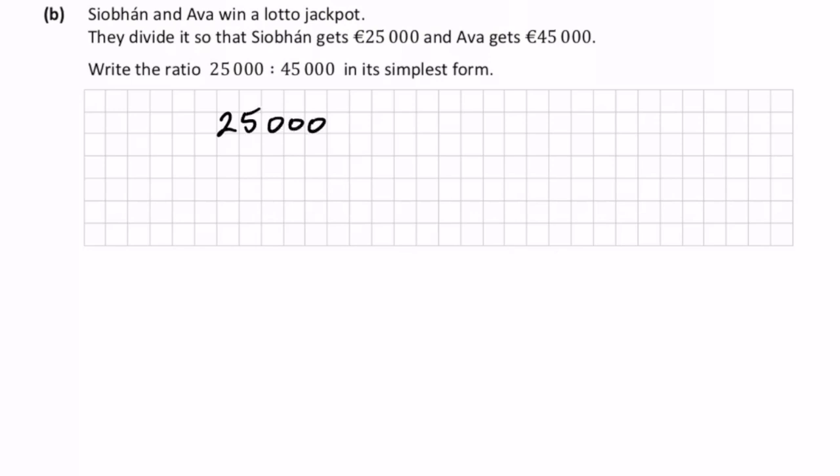Now one approach to doing this would be to write this into a calculator. If you wrote down 25,000 divided by 45,000, it will give you the fraction ratio here. We could divide both sides straight away by a thousand.